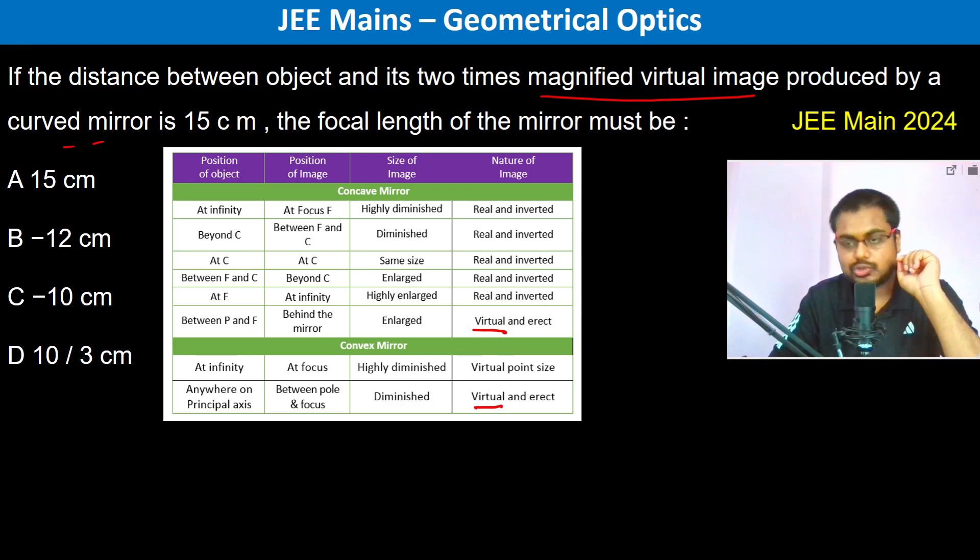Both of them produce virtual images. Now the virtual image which is enlarged is produced only by concave mirror. In convex mirror it produces diminished image. So therefore it's going to be a concave mirror and this is going to be the case.